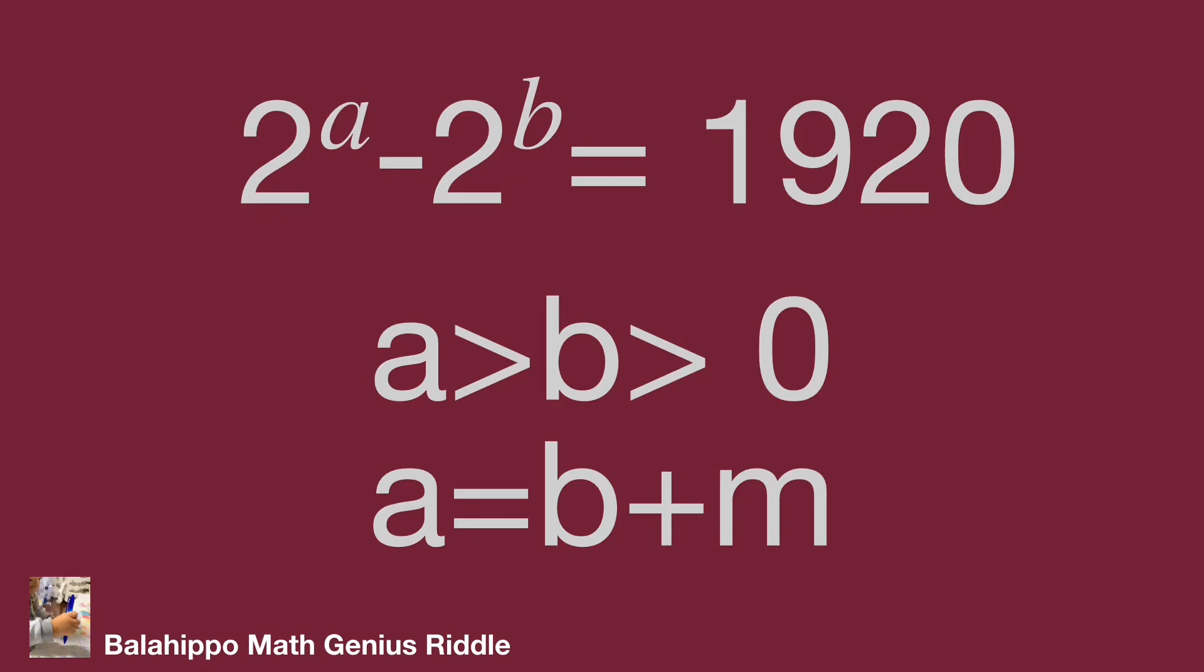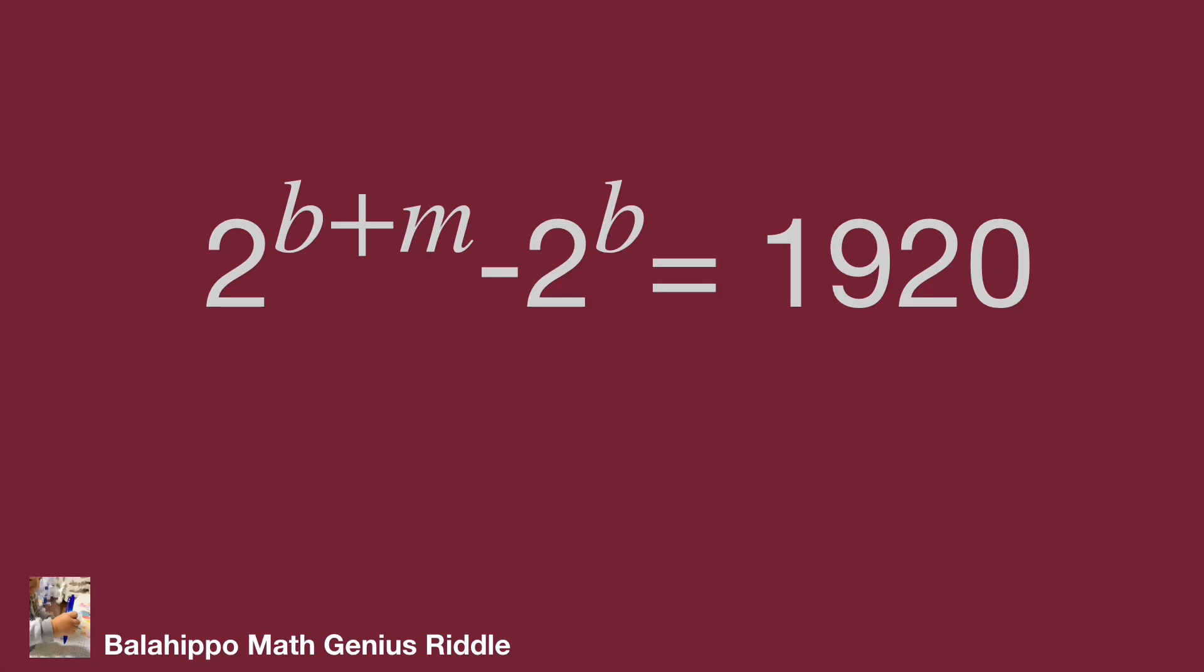Substitute a by b plus m into the given equation as 2 power b plus m minus 2 power b equals 1920.